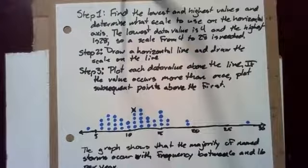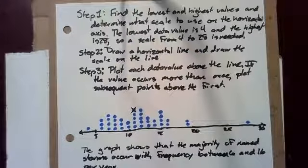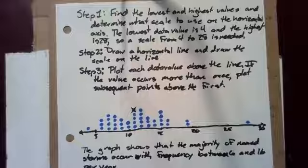And what we see is that the graph shows the majority of named storms occur with frequency between 6 and 16 per year.